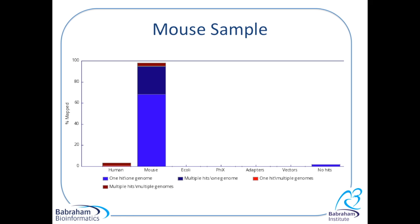The vast majority of reads which mapped to the mouse genome mapped uniquely to that genome and didn't map to any of the others. However, there is a small proportion of reads, i.e. the red ones, which map to the mouse genome and one other, i.e. they map to the human genome. But what is important is that no reads mapped uniquely to the human genome.